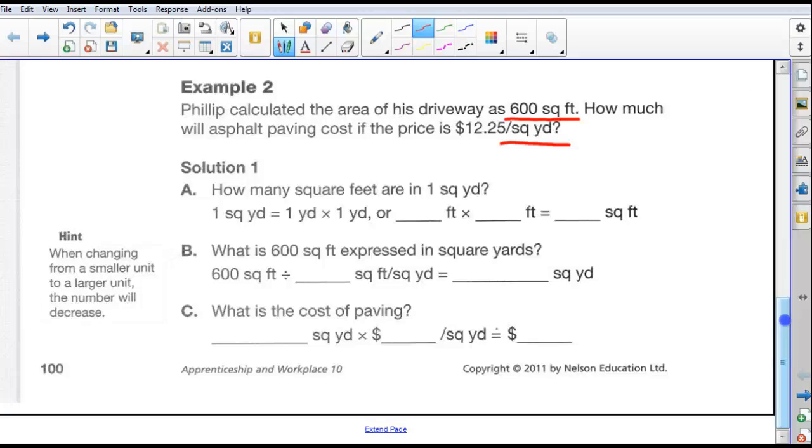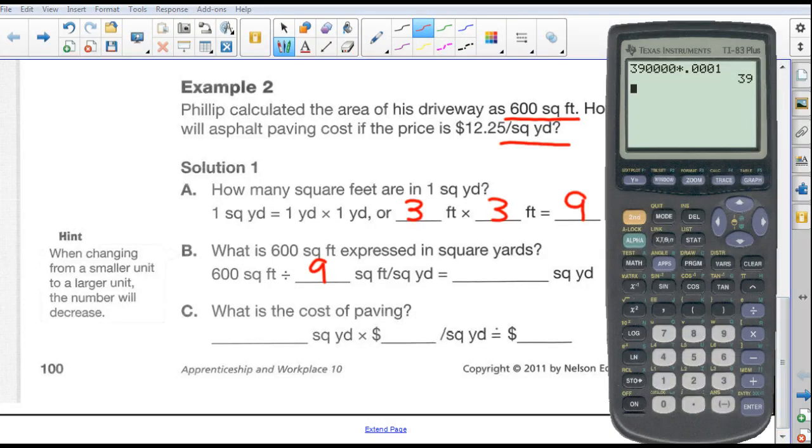That's A. Well, 1 square yard is 1 yard times 1 yard, or, and we know that 1 yard is 3 feet times 3 feet. 3 times 3 is 9. So 1 yard is 9 square feet. B, what is 600 square feet expressed in square yards? Well, 600 square feet divided by 9 square feet per yard. Okay, so we take our calculator and we take 600, we divide that by 9 and we get an answer of 66.66 repeating.